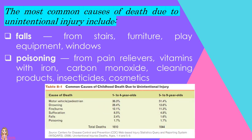Here is a table that shows common causes of childhood death due to unintentional injury. Source: Centers for Disease Control and Prevention, Web-based Injury Statistics Query and Reporting System, 2006 — Unintentional Injury Deaths, Ages 1–4 and 5–9.